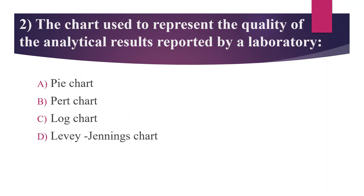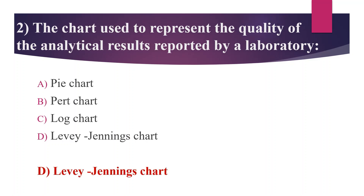Second question: The chart used to represent the quality of analytical results reported by a laboratory — Option A: Pie chart, Option B: PERT chart, Option C: Log chart, Option D: Levey-Jennings chart. Answer is Option D, Levey-Jennings chart. It is a quality control chart — a graph on which quality control data is plotted to give a visual indication of whether a laboratory test is working well.